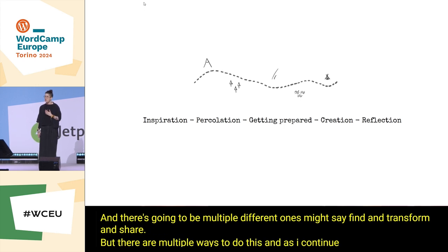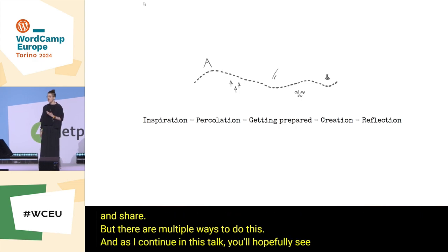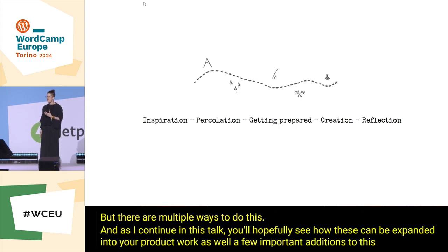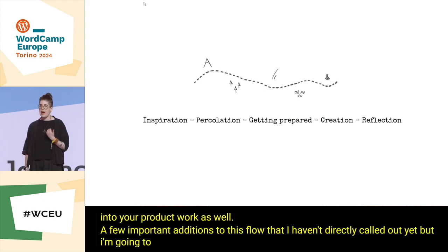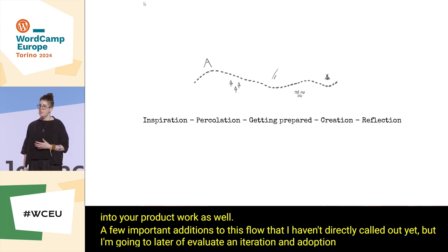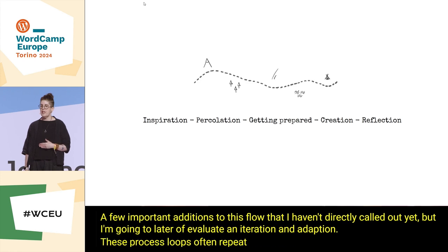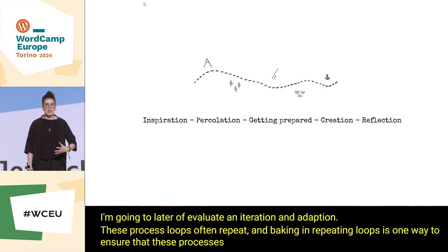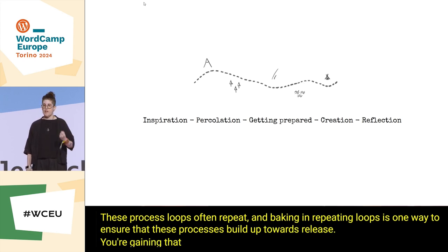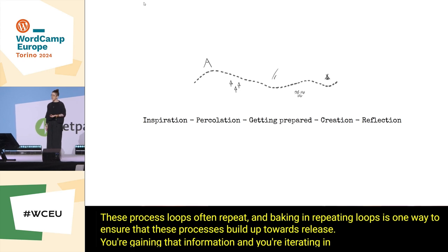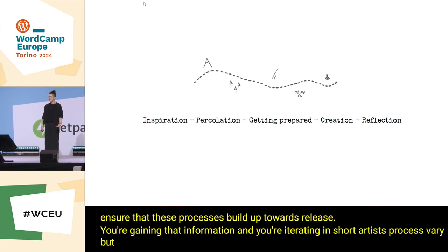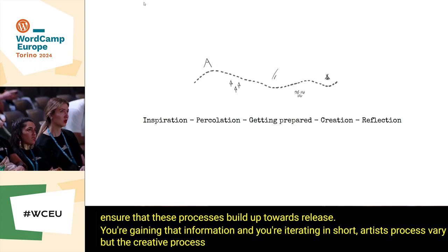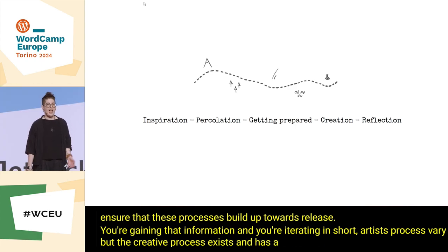As I continue in this talk, you'll hopefully see how these can be expanded into your product work as well. A few important additions to this flow are evaluation, iteration, and adaptation. These process loops often repeat, and baking in repeating loops is one way to ensure that these processes build up towards release. In short, artists' processes vary, but the creative process exists and has a flow from start to finish — you don't just do the messy middle and then it happens.